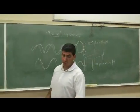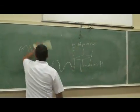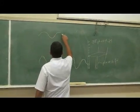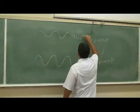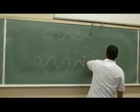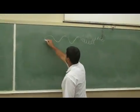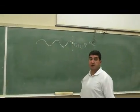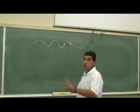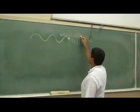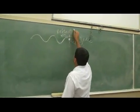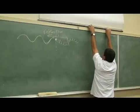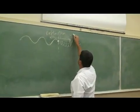What if you have two different mediums tied together, like two different springs — a tight spring and a loose spring? When the wave hits the interface between the two springs, the wave does two things: one part reflects and the other part transmits. This is known as reflection and transmission.